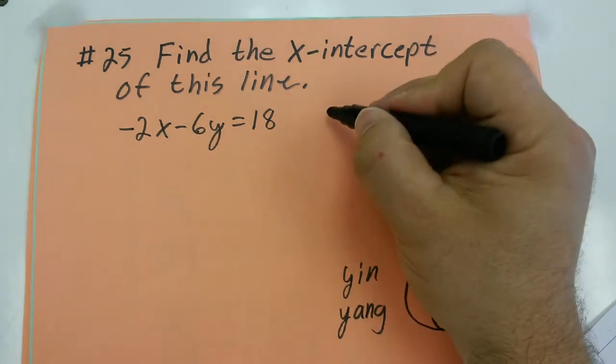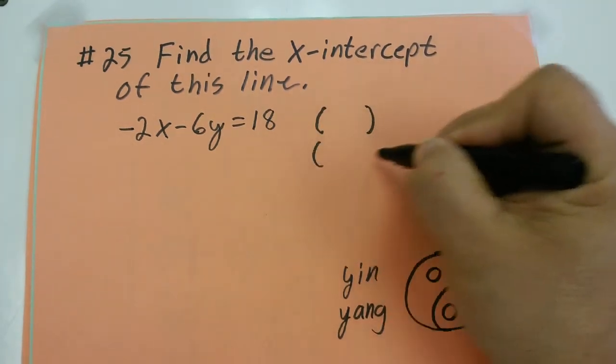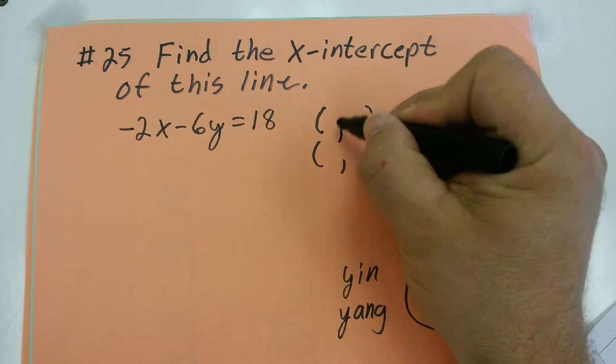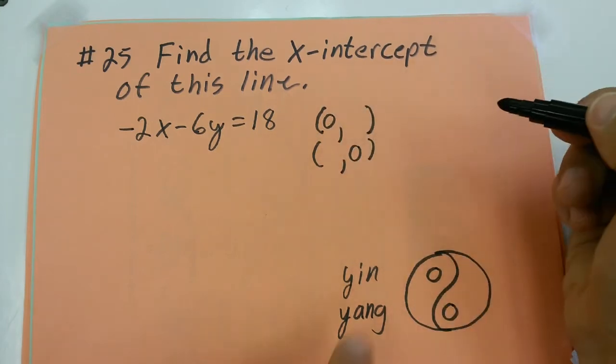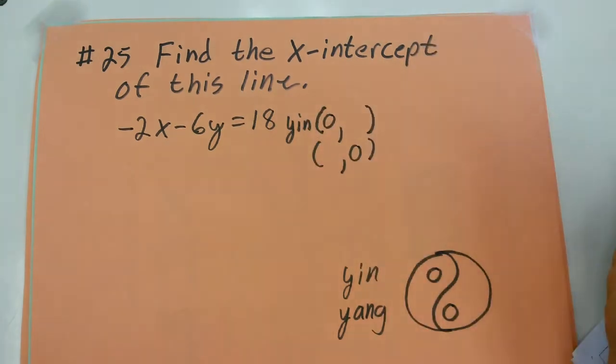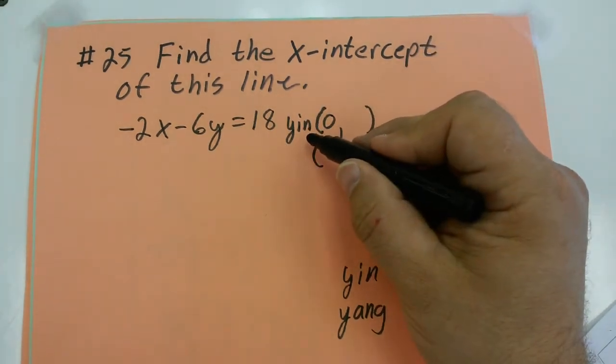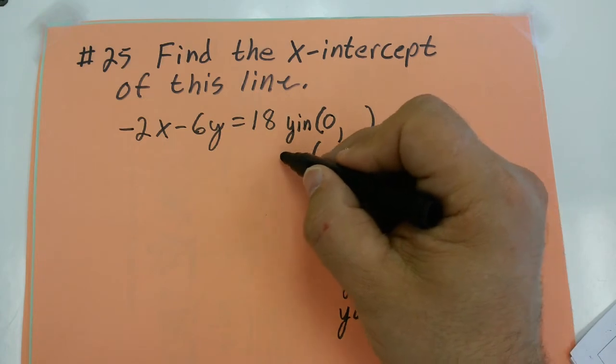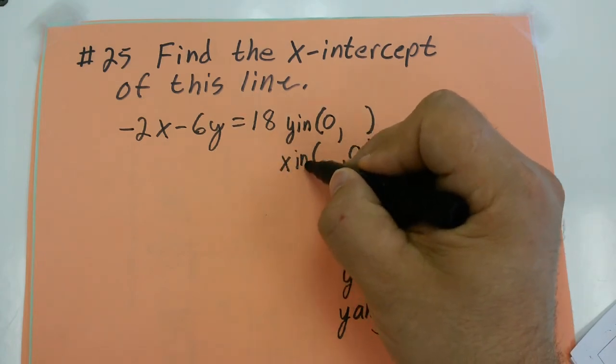Here's what I'm going to do. I'm going to come up here next to the problem and set up some parentheses. This is yin-yang. So this here is going to be my yin, which gives me my y-intercept. And this is yang, which is going to be my x-intercept.